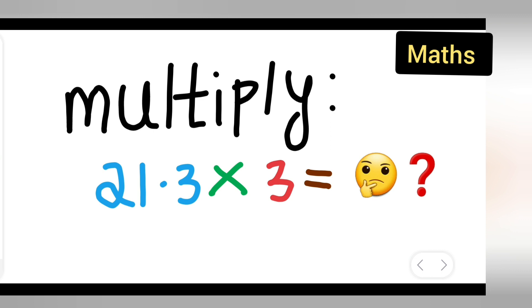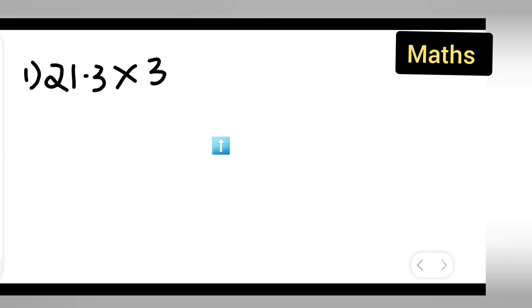Let us see how to multiply the given number with the decimal point. First, I can take down the question: multiply 21.3 multiplied by 3. So first, what I will do is write down 21.3 multiplied by 3.